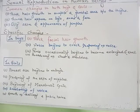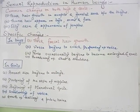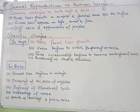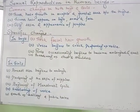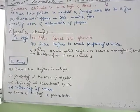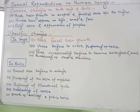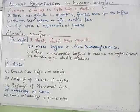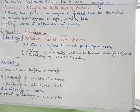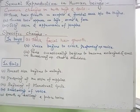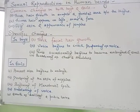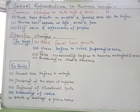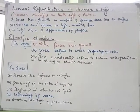Secondary sexual characters in human males appear during puberty around age 12 to 14 years. These include appearance of beard and mustache, growth of axillary and pubic hair, broadening of chest and shoulders, and appearance of hair on chest, arms and legs.